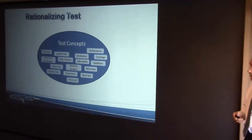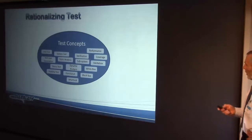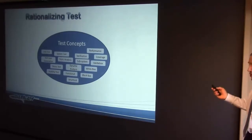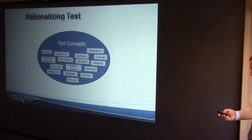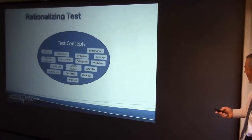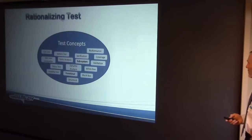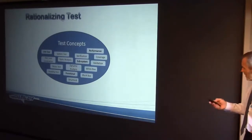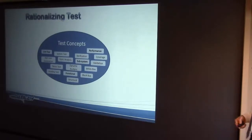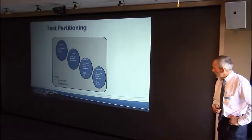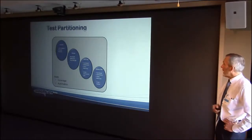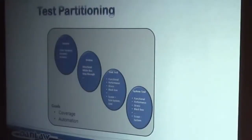Not every test is automatable. We need to understand or define something about how we create and design tests so we can decide what's automatable and what's not, so we're all talking the same language. There are many phrases people use about testing and that random terminology won't work if we're going to formalise it. I've divided testing into four major categories: test analysis, review, unit test, and system test. That classification helps us make progress in deciding what's automatable and what's not.